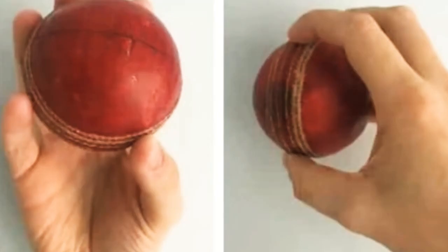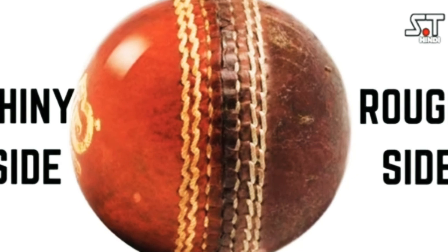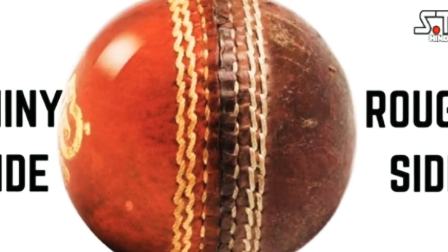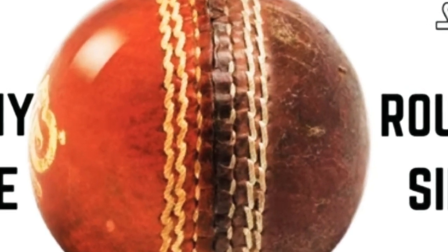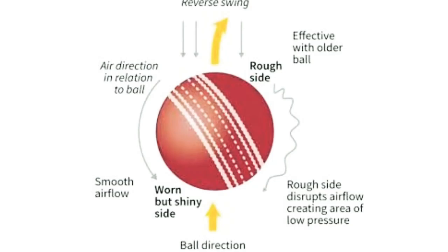During a cricket match, bowlers continuously polish one side of the ball. After some time, one side is quite rough and the other is still smooth, as we can see here. Hence, when the ball is bowled and passes through the air, the speed on one side of the ball is faster than the other side.